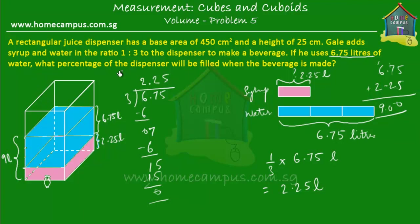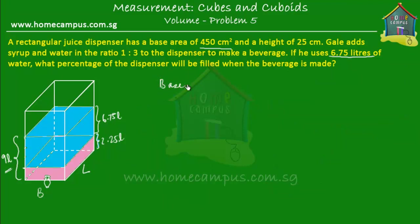What is the question? Well, the question is: what percentage of the dispenser will be filled when the beverage is made? So there is 9 litres of beverage in the rectangular juice dispenser. We have to find out what percentage of the whole capacity of the rectangular dispenser is 9 litres. We can find out the capacity of the dispenser. So we know that the dispenser has a base area of 450 centimetres squared, which means the product of its length and breadth. The base area equals length times breadth, which is equal to 450 cm².